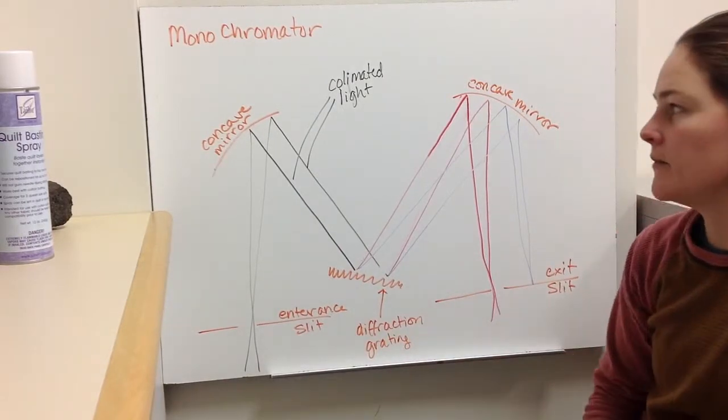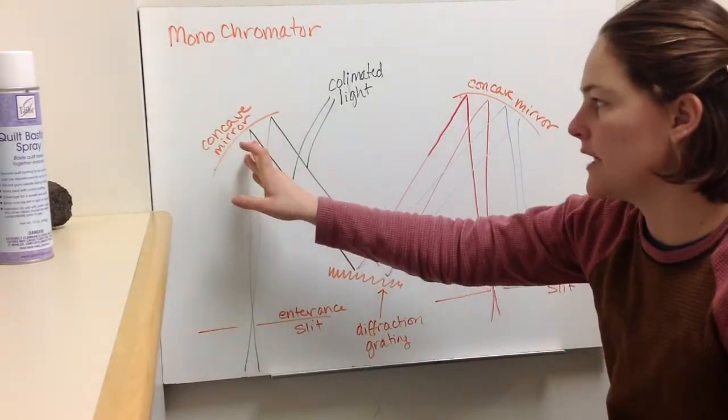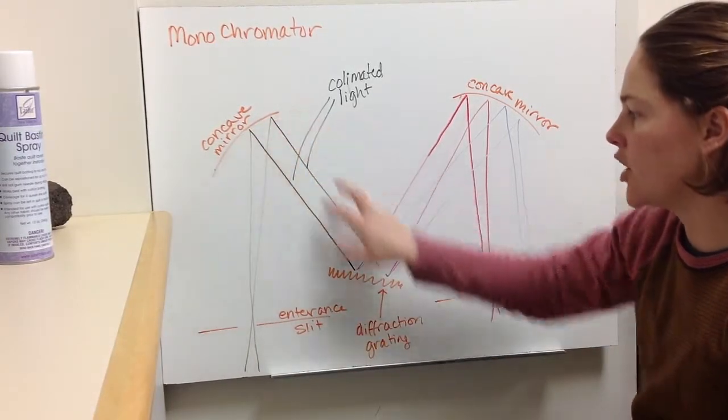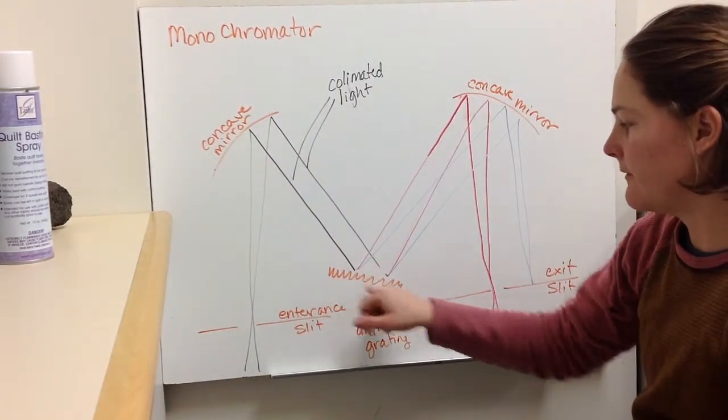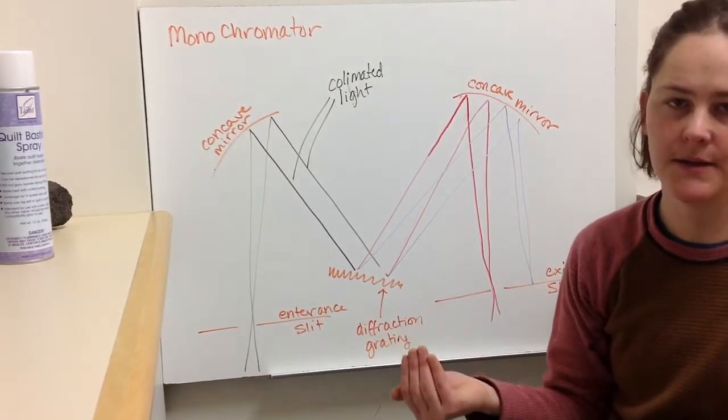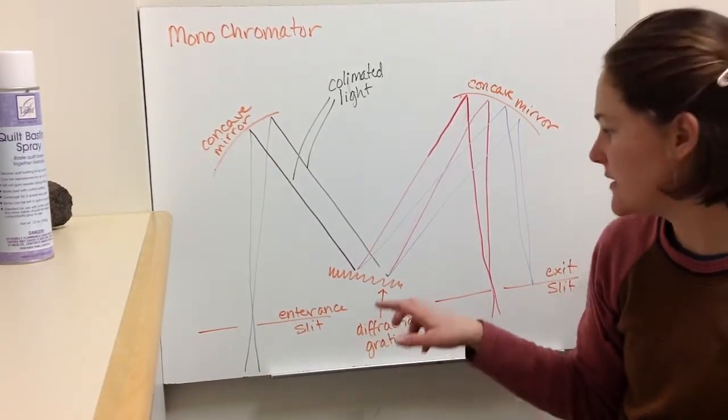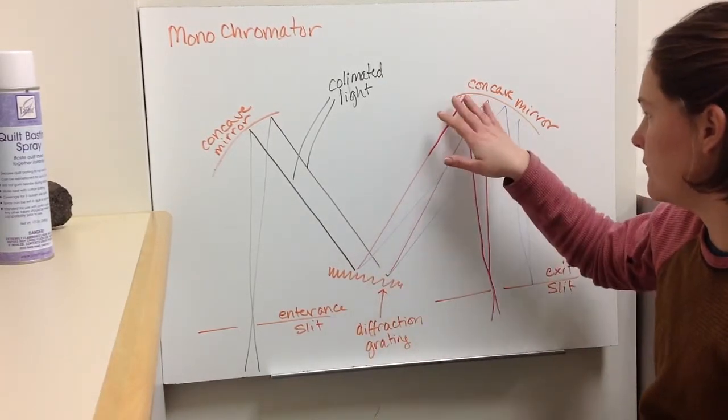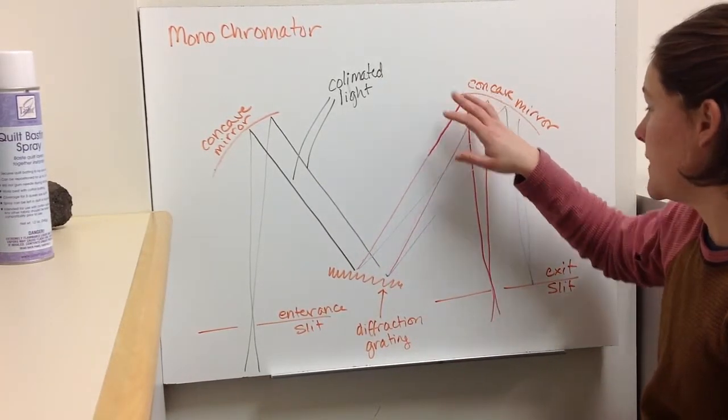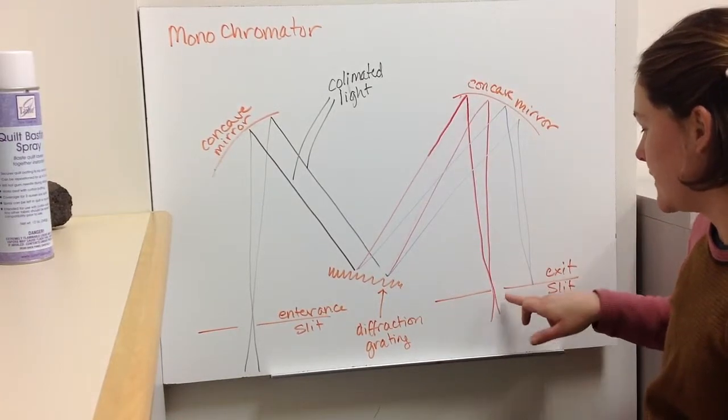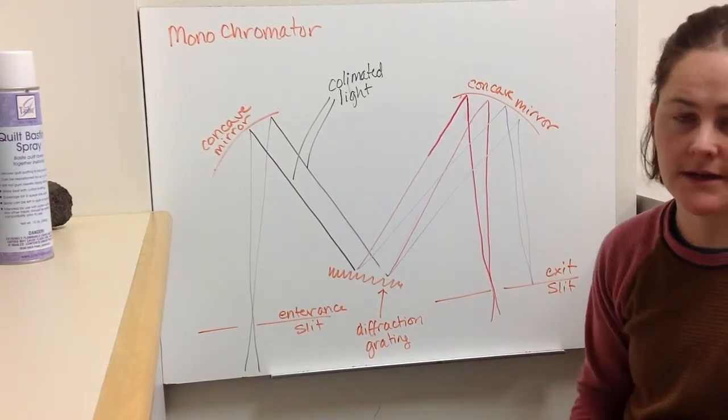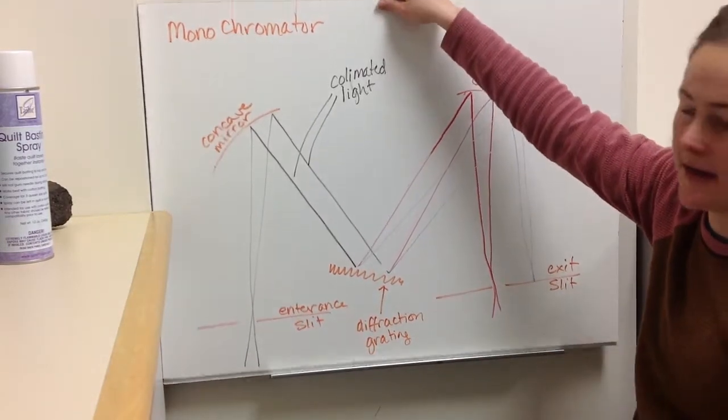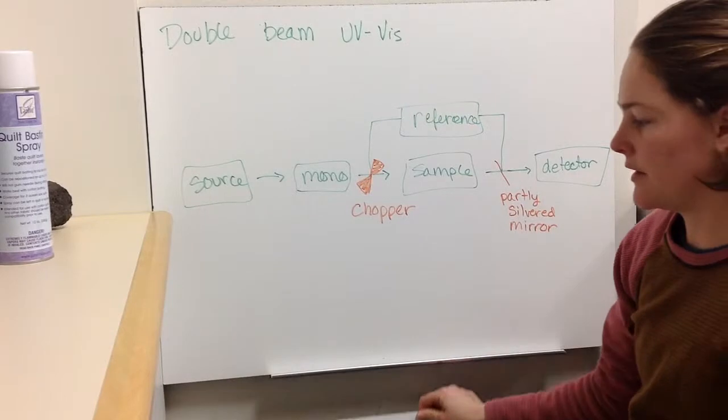So let's look in a little bit more detail at a monochromator. So you have white light coming in through the entrance slit. You're going to have a concave mirror that collimates the light, and then you're going to have a diffraction grating, which is going to break it into its component wavelengths. And then that wavelength dispersed light is going to come up and hit a second concave mirror, and that's going to focus a single wavelength down onto the exit slit. So then that one wavelength can go on through the optics.